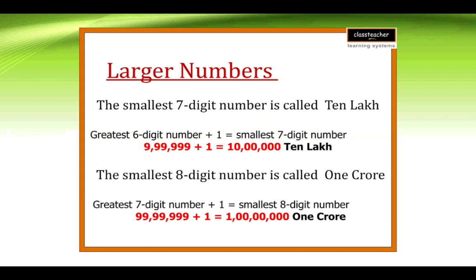The greatest six-digit number plus one equals the smallest seven-digit number. The smallest seven-digit number is called ten lakh. The greatest seven-digit number plus one equals the smallest eight-digit number.